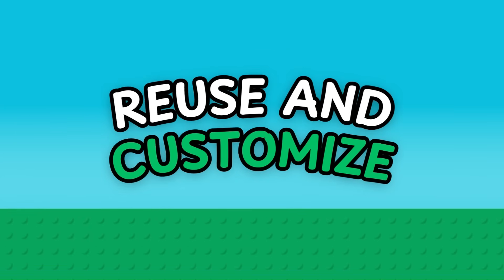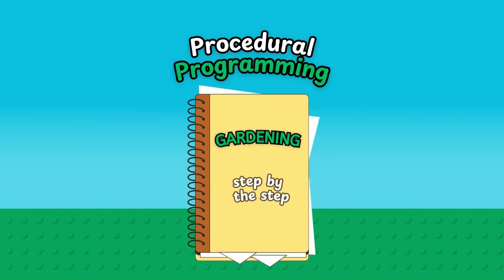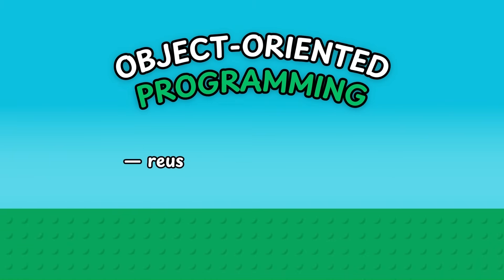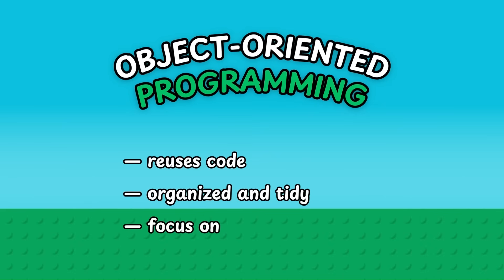So, to plant it all together: procedural programming is like keeping a giant notebook where you copy every single step of gardening over and over. It works for small things, but as your garden grows, that notebook gets overwhelming. Object-oriented programming, on the other hand, is like creating blueprints for your plants. You grow specific plants from those blueprints, and thanks to inheritance, each plant knows how to handle itself. OOP saves time by letting you reuse code, keep things organized and tidy, and focus on the bigger picture instead of repeating tiny details.